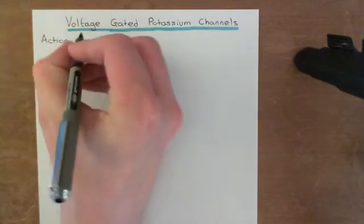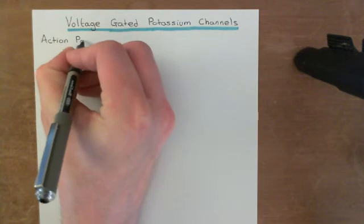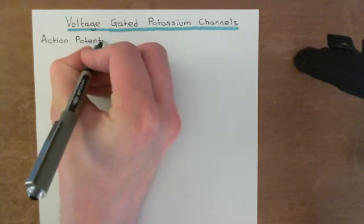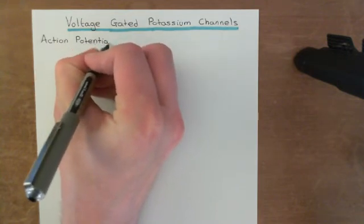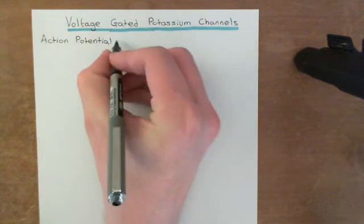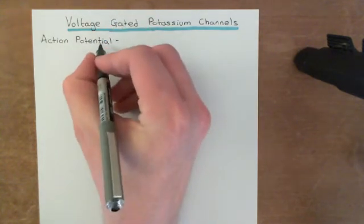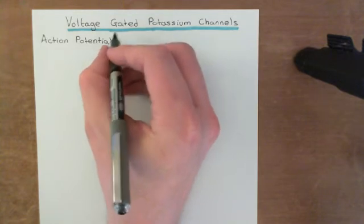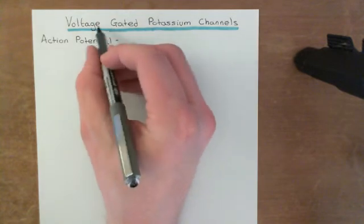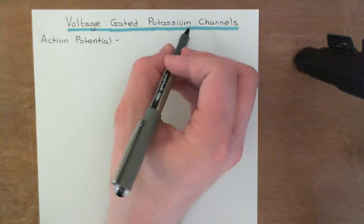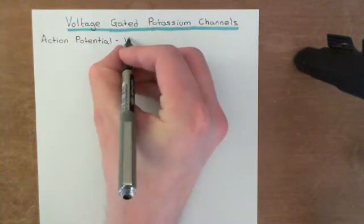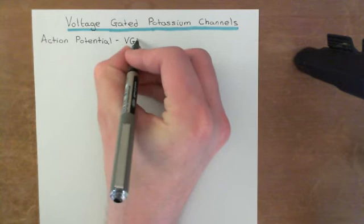The action potential is a physiological phenomenon that certain cells in the body display. The cells which are capable of an action potential are cells which have special voltage-gated ion channels in their cell membranes. Specifically, you need voltage-gated potassium channels — the topic of this video — but you also need voltage-gated sodium channels, which I'll abbreviate as VGNCs.